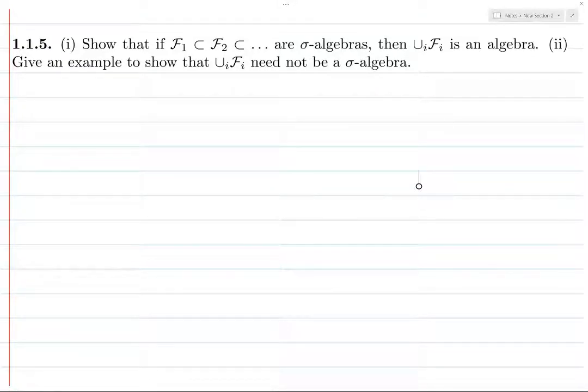Alright, so my power is out, so hopefully I can record this video before my laptop dies, but we'll see what happens. Okay, so we have an ascending chain of sigma algebras, and we want to prove that the union is an algebra. Okay, so let's start with that.